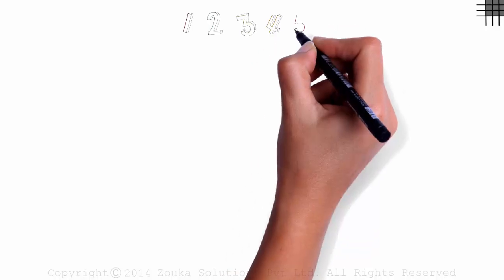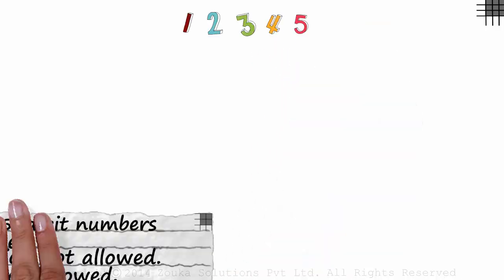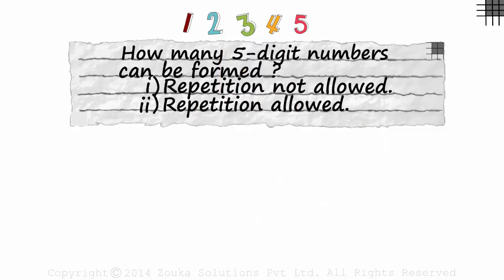1, 2, 3, 4, and 5 are the five digits given to us. And we have been asked this: How many five digit numbers can be formed using these five digits? And we need to figure this out for two cases.